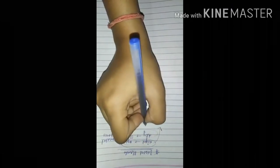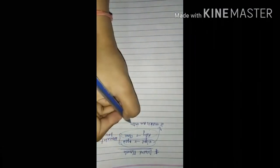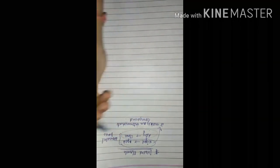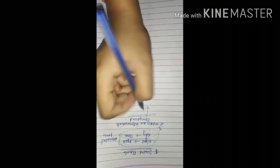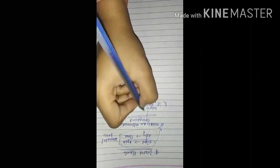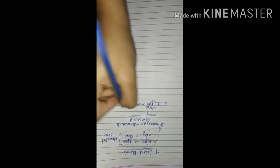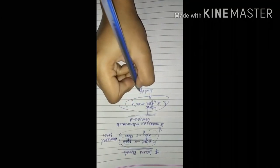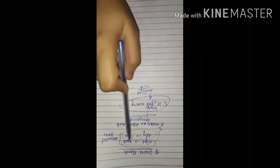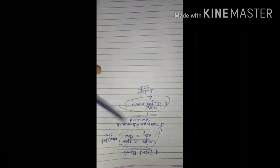When the stomata is open at night in desert plants, an intermediate compound is formed. This intermediate compound helps in food making. So the next day, when sunlight is available, the plant can easily make food using the intermediate compound that was formed during the night.